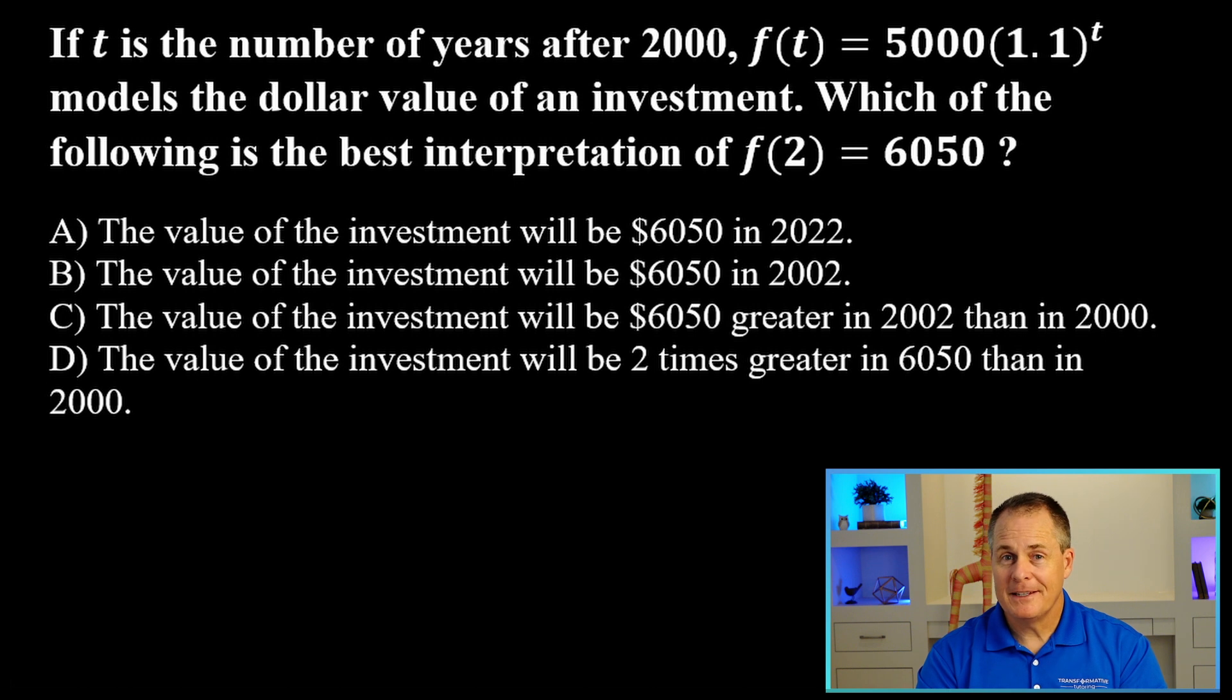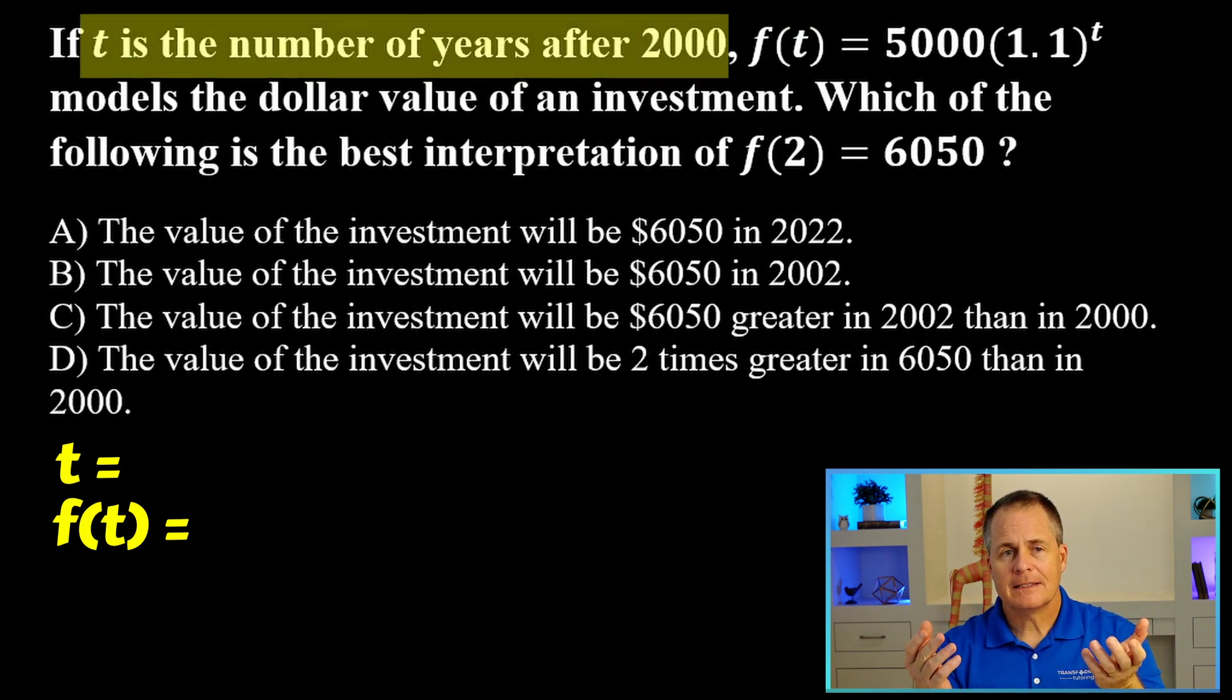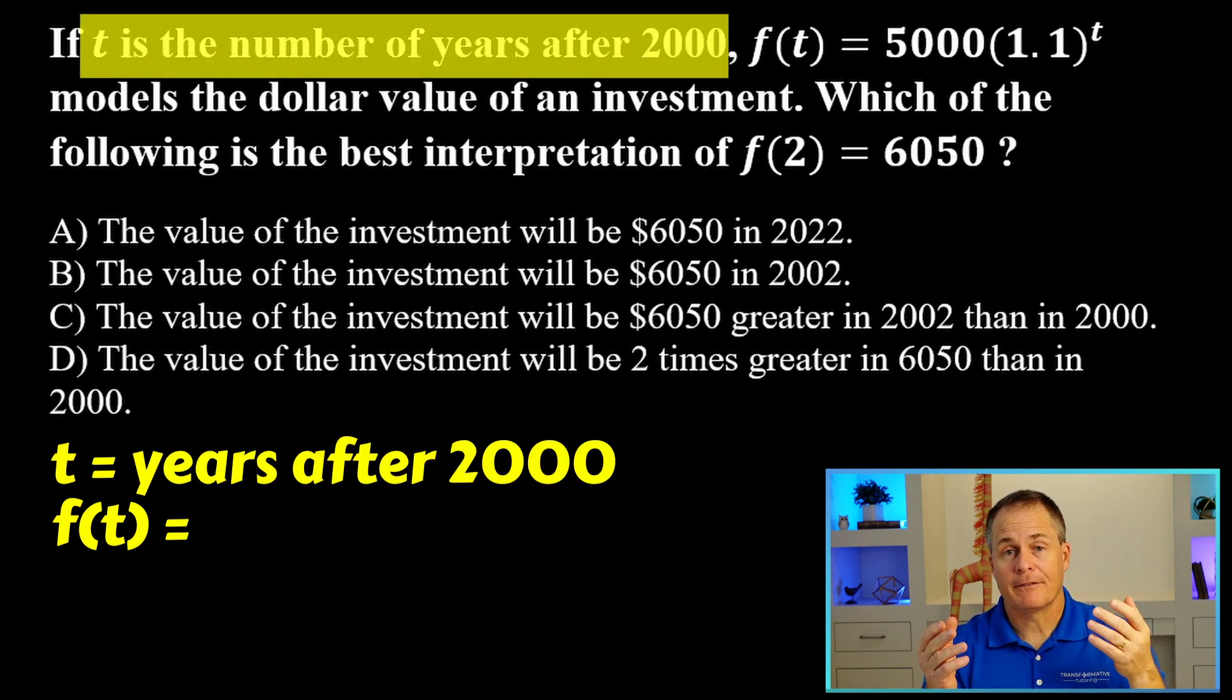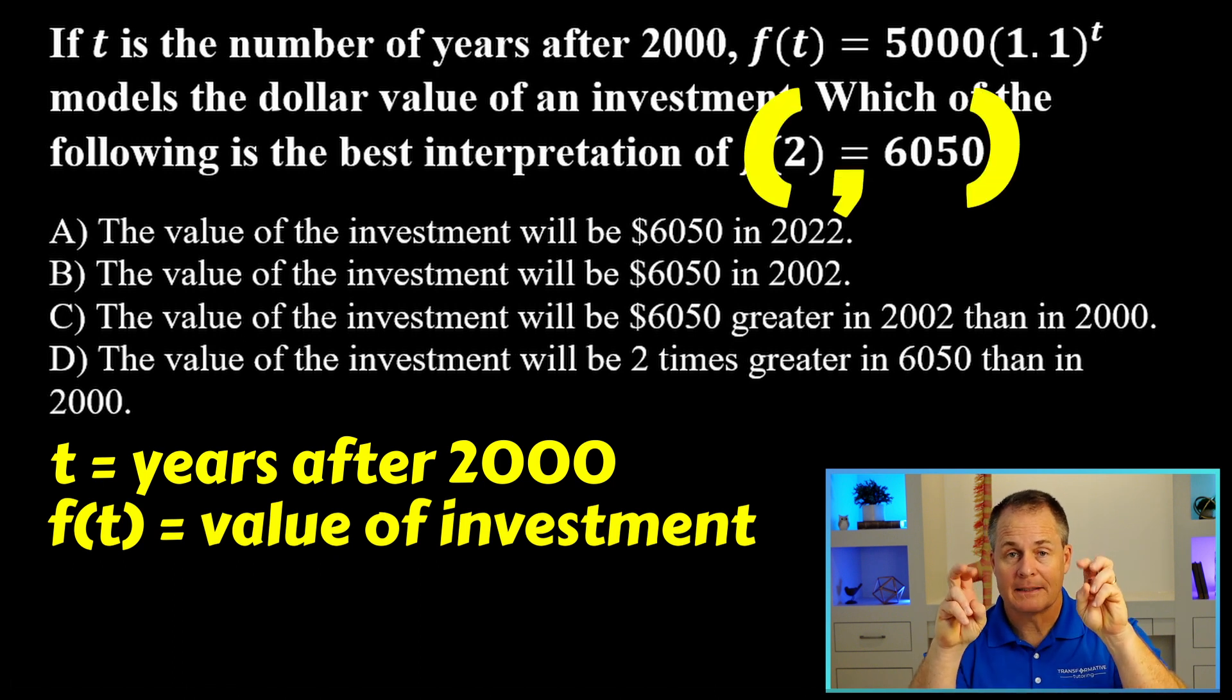Well, this problem is very similar to the last one. So let's just take the same approach and summarize our variables. We've got two variables, f(t) and t. Again, I think t is easier to understand. What is t? Well, the first sentence tells us t is the number of years after 2000. So I'm going to summarize that down here. And then it says f(t) is the value of the investment. And let's head on down to the ordered pair in disguise.